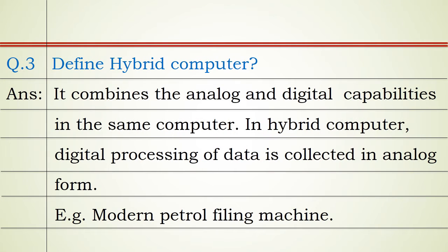Question number three: define hybrid computer. Answer: It combines the analog and digital capabilities in the same computer. In hybrid computer, digital processing of data is collected in analog form. Example: modern petrol filling machine.